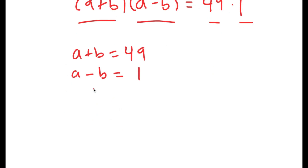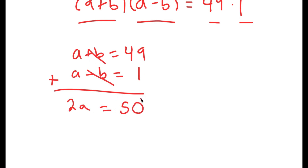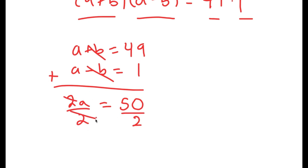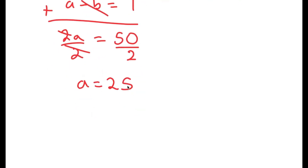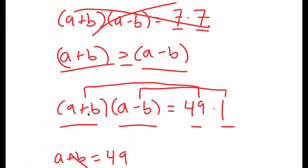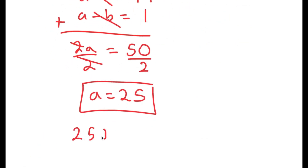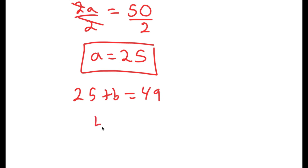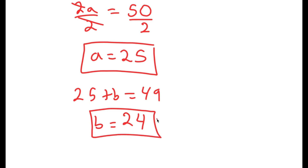So we have a system of equations, and I'm going to add these equations together. a plus a is 2a, b and negative b cancel out, and 49 plus 1 is 50. So I get that 2a is equal to 50. Dividing both sides by 2, I get a is equal to 25. Now that we know a is equal to 25, remember that a plus b is equal to 49, so 25 plus b equals 49 and b is equal to 49 minus 25, which is 24. So a equals 25 and b equals 24.